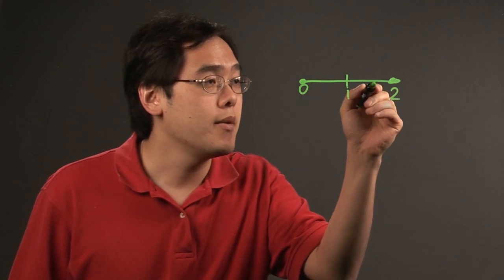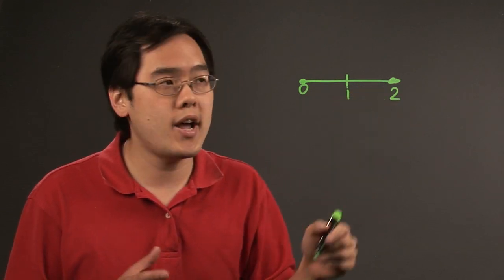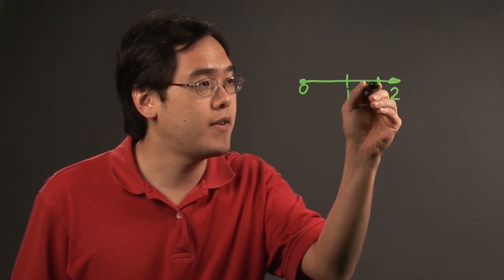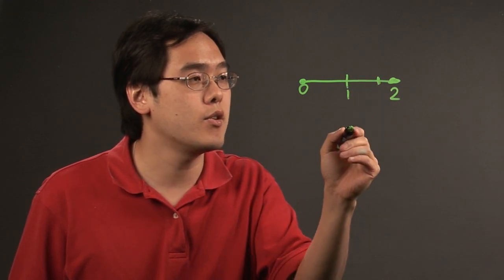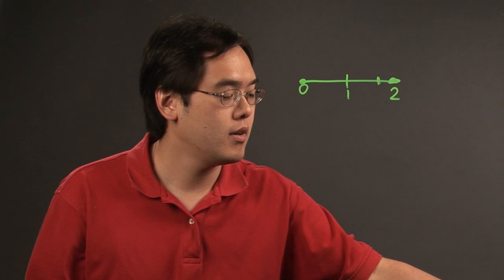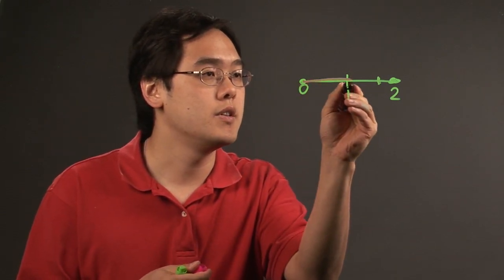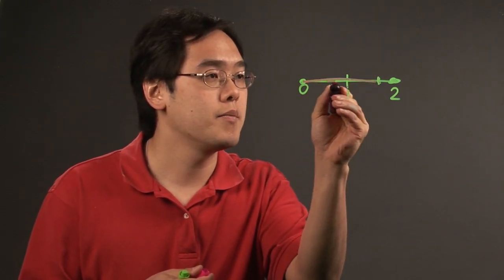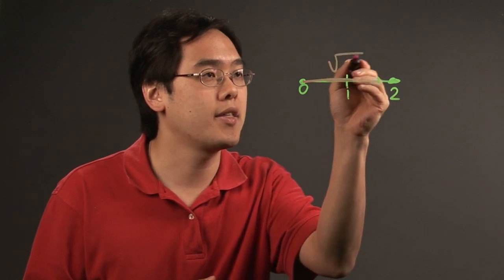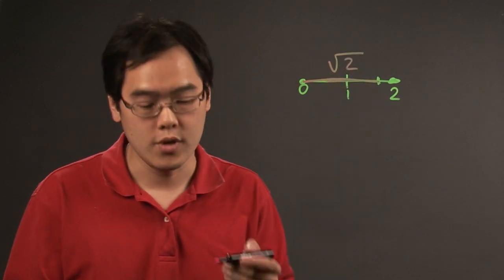For example, here I know the square root of 2 is approximately close to this particular spot, so if I wanted to create another line segment from here to here, I can say that this has a total length of square root of 2.